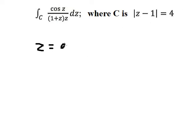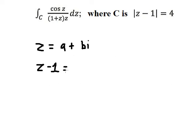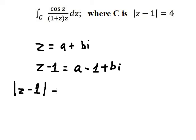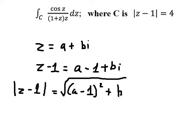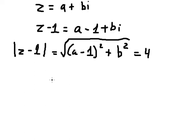We know that z equals a plus bi — this one for the real part, this one for imaginary. So we put this inside here and we have a minus one plus bi. Now we put this inside the absolute value, so we have the square root of (a minus one) squared plus b squared, and that equals number four. Now we square both sides to cancel the square root.